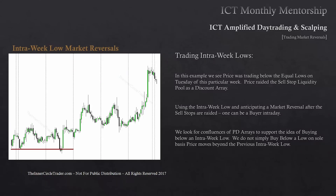Trading intra-week lows. In this example, price was trading below equal lows on Tuesday of this particular week, and price raided the sell stop liquidity pool as a discount array. There's a low shown from the previous week — equal lows on the previous Friday and Monday — and those two equal lows are traded through on Tuesday, violating that old low. You can blend an intra-week low with the previous week's range as well, especially if the reversal occurs on a Monday or Tuesday, as seen here.